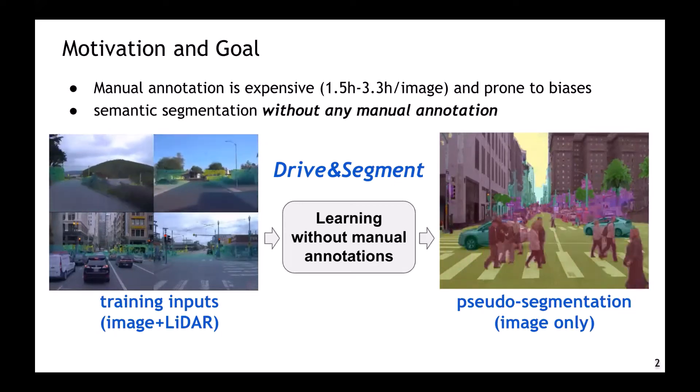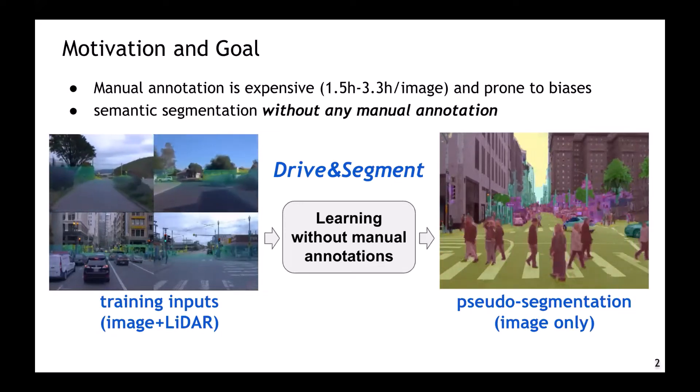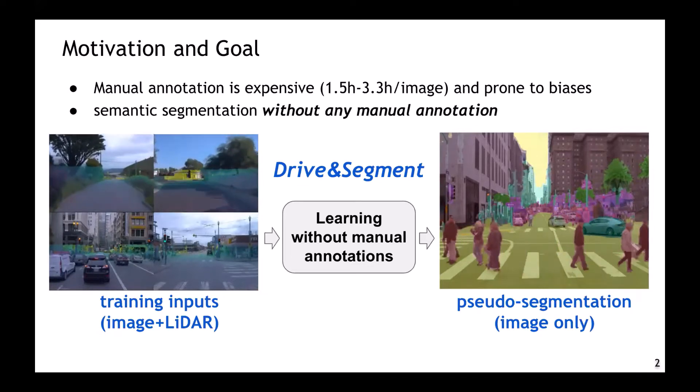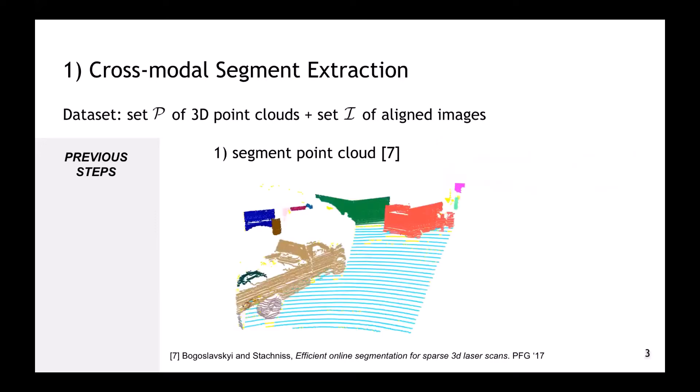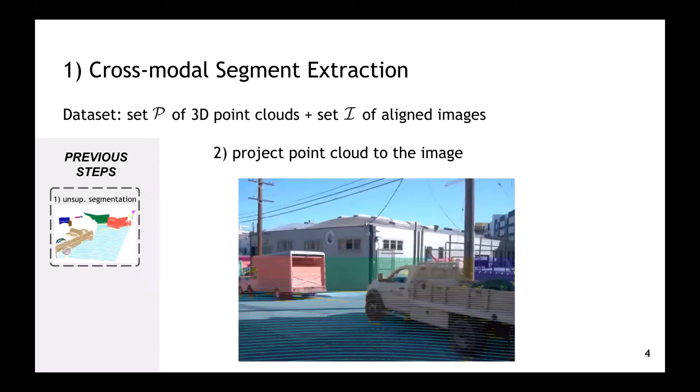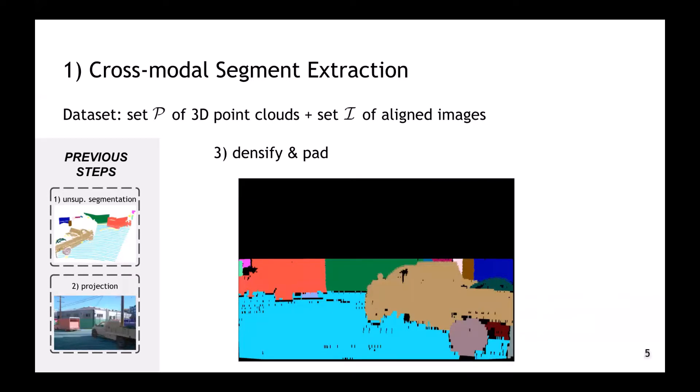Our method, called Driven Segment, consists of three main steps. The first step is cross-modal segment extraction. We start by segmenting the corresponding point cloud using an unsupervised method, then project the resulting 3D segments into the image, and pad the resulting annotations to the size of the input image.